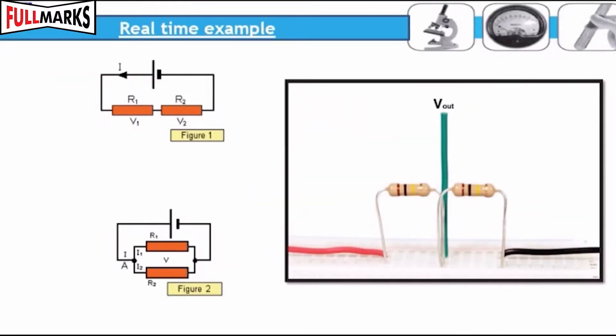Real-time example: A resistor is used to increase or decrease the flow of current in a closed circuit. Resistors are widely used in all electronic components.